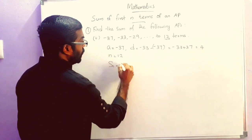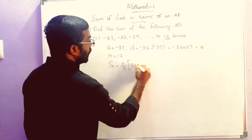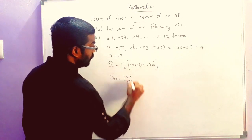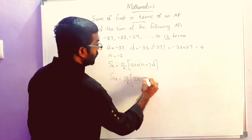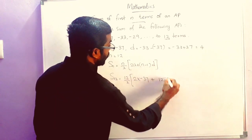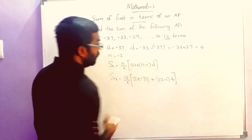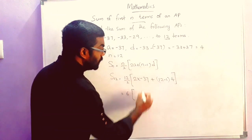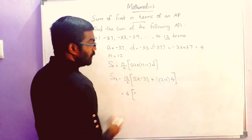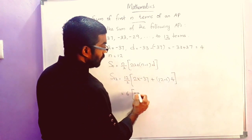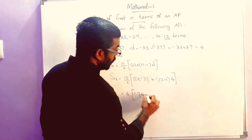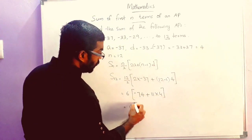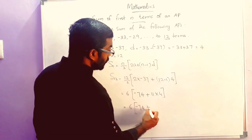S_N is equal to N by 2 into 2A plus N minus 1 into D. That is S12 is equal to 12 by 2 into 2 into minus 37, then plus 12 minus 1 into 4. 12 by 2 is 6. Minus 37 into 2 is minus 74. Then plus 11 into 4, which is 44. So 6 into minus 74 plus 44.